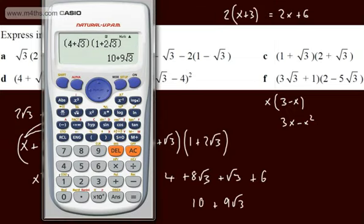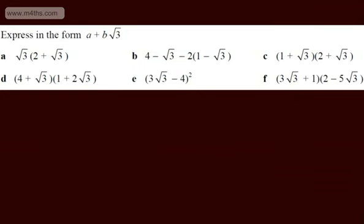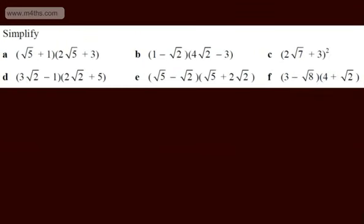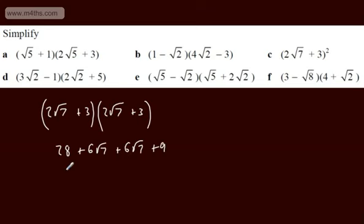So that's expanding brackets. Let's do an example: 2 root 7 plus 3, squared — that is, 2 root 7 plus 3 multiplied by 2 root 7 plus 3. First terms: 2 times 2 is 4, root 7 times root 7 is 7, so 4 times 7 is 28. Outer terms: 2 root 7 times 3 gives 6 root 7. Inner terms: same again, plus 6 root 7. Last terms: 3 times 3 is 9. Adding together: 37 plus 12 root 7.